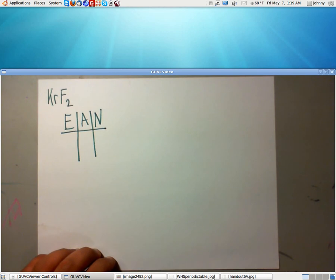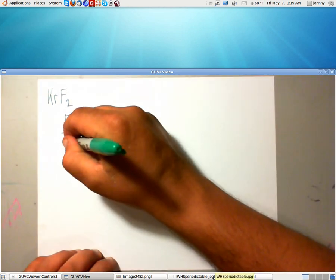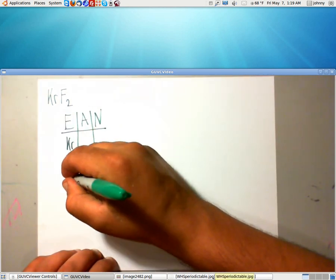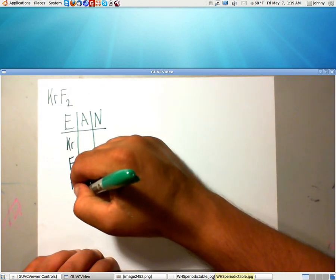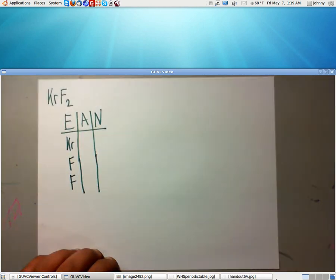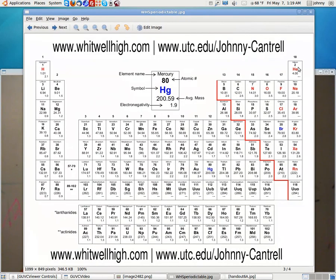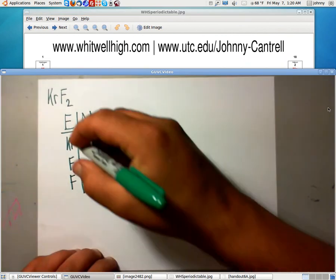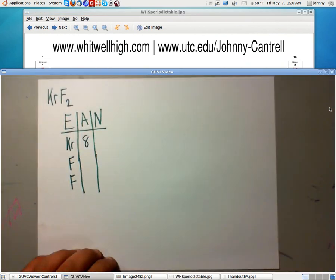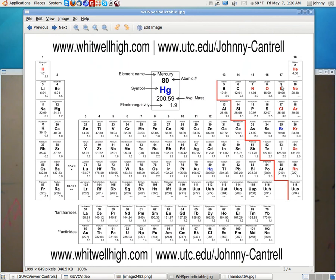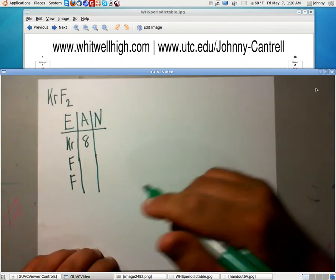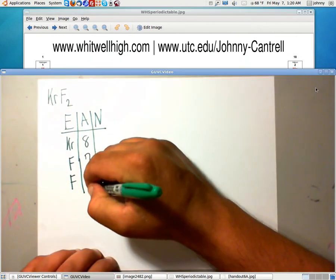Now we need to find out how many valence electrons these guys have, the Kr and the 2Fs. Krypton is a noble gas. If you look at the noble gases, all noble gases have 8 valence electrons except helium, it only has 2. So Kr would have 8. Let's go ahead and record that. Fluorine, if you look, is in column 17. So that's 7 valence electrons.